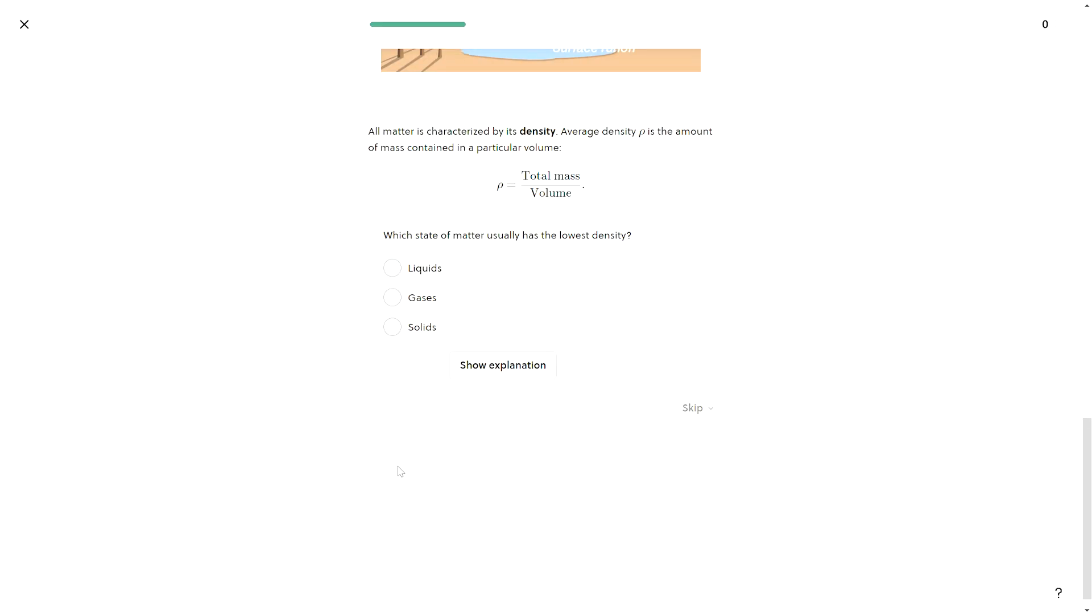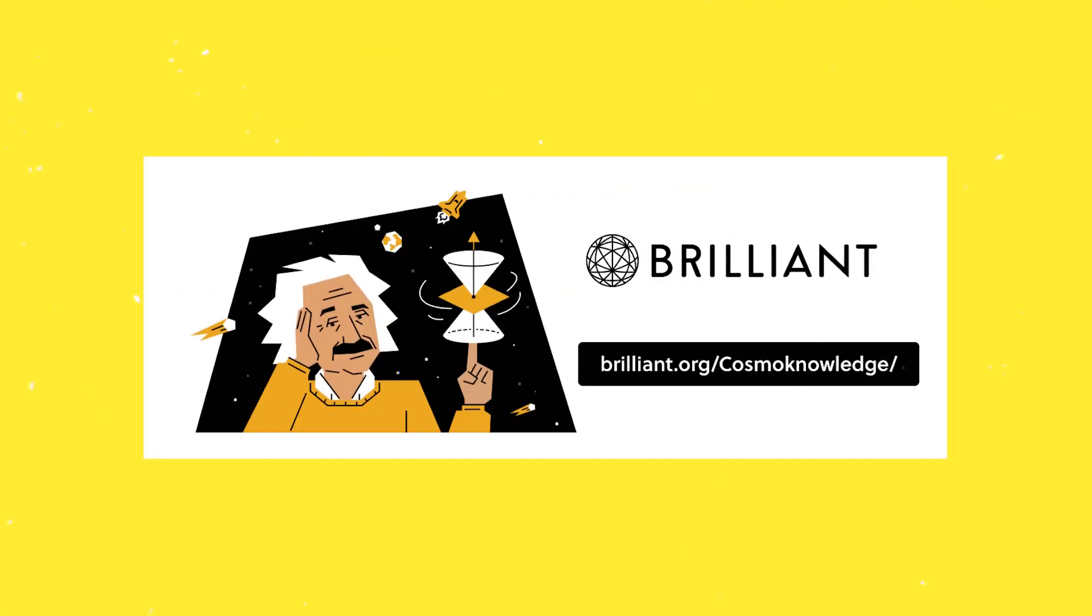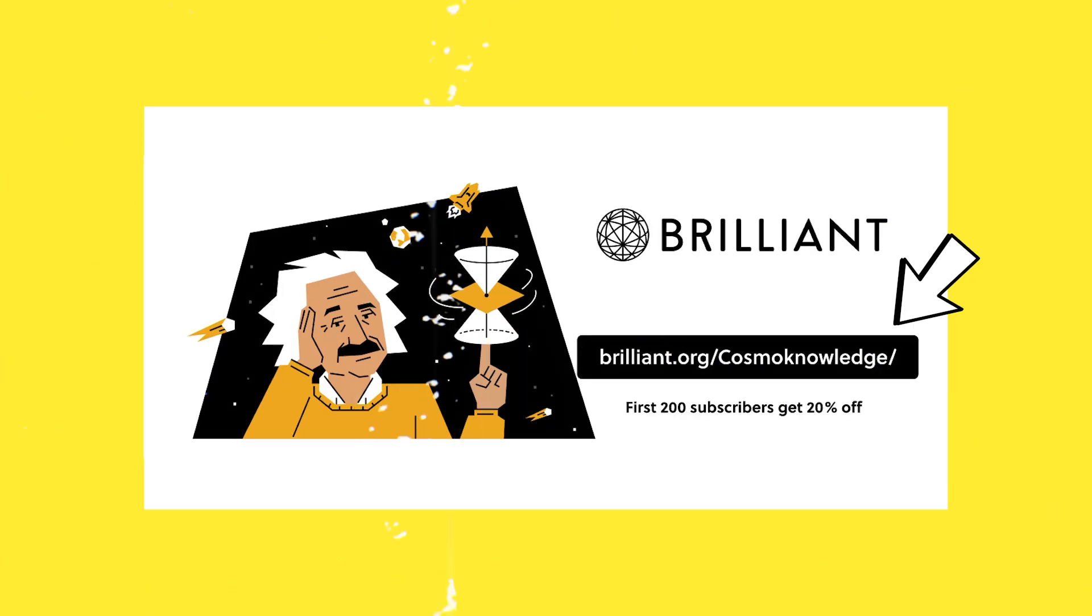Join the Brilliant community, track your progress, and develop your skills. Ready to ignite your curiosity? Go to Brilliant.org slash CosmoKnowledge to get a 30-day free trial. Plus, the first 200 people will get 20% off an annual premium membership. Click the link in the description and unlock your full potential.